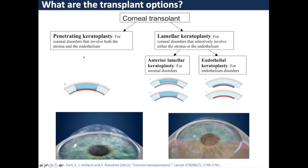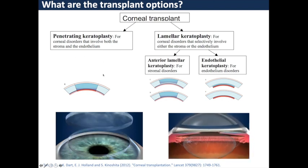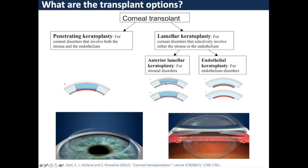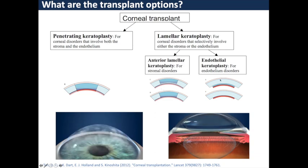Penetrating keratoplasty is a one-size-fits-all solution for all corneal disorders where you remove the full-thickness cornea and replace it with a full-thickness donor. Increasingly, we're using anterior lamellar keratoplasty for stromal disorders, leaving behind the host's endothelial layer intact. In endothelial keratoplasty, we leave the anterior stroma intact and selectively replace the endothelial layer, which is diseased in the patient.